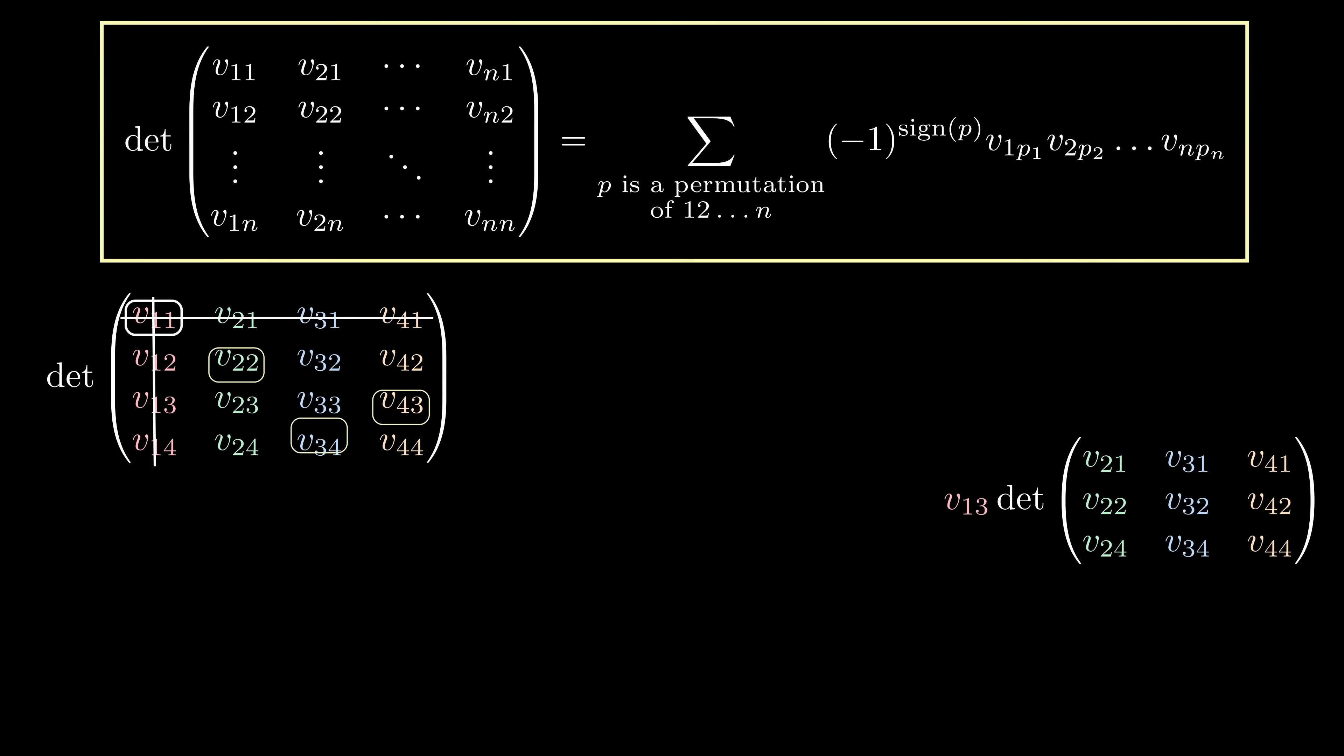Similarly, we can look at the other 3 groups of terms, depending on which entry of the first column we chose. That said, the act of striking out a row and column messes with the sign of a permutation. So as we go down the first column, we must include an alternating pattern of pluses and minuses as a correcting factor.